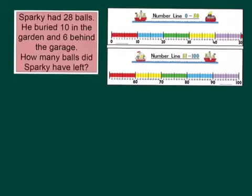So he had 28 balls. He buried, so that means we wouldn't be able to see those 10 anymore. He buried those ones in the garden and then he buried six behind the garage. So behind sort of tells us that we wouldn't be able to see them anymore. The big key word though is how many did he have left?